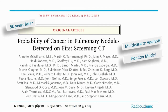The PanCan study from Canada looked at the probability of cancer in pulmonary nodules in lung screening and came up with a good model, which is actually a multivariate analysis based on features that we can identify on these lesions — for example, the size of a nodule or the spiculation of a nodule.